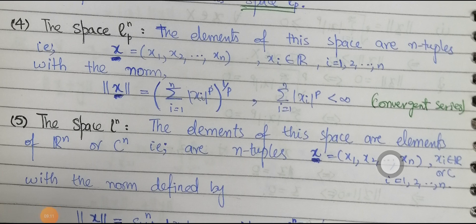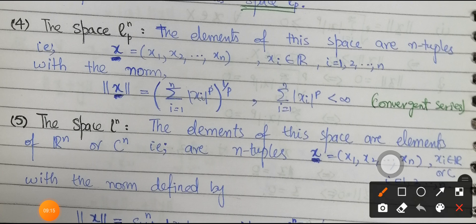Example 4: The space lⁿₚ consists of n-tuples x = (x₁, x₂, …, xₙ) with xᵢ ∈ ℝ and i varying from 1 to n, with the norm ‖x‖ = (∑ᵢ₌₁ⁿ |xᵢ|ᵖ)^(1/p). This is the same norm as in the previous example, but here we have n-tuples rather than infinite sequences.